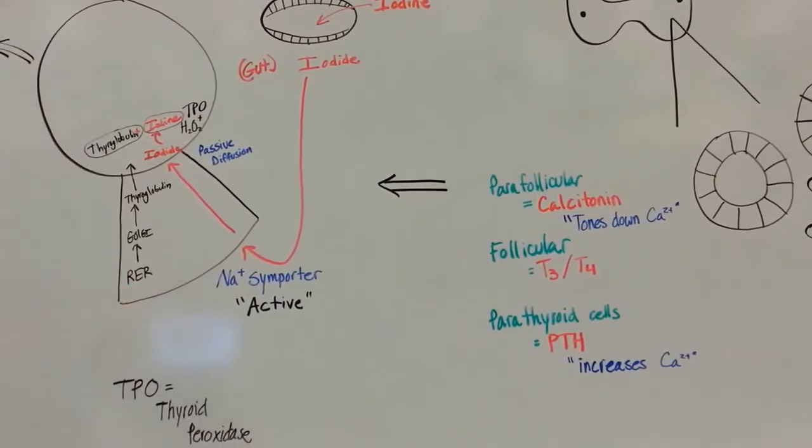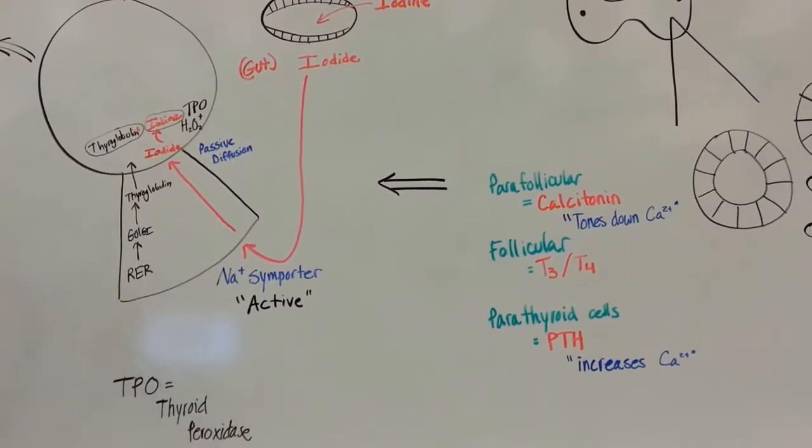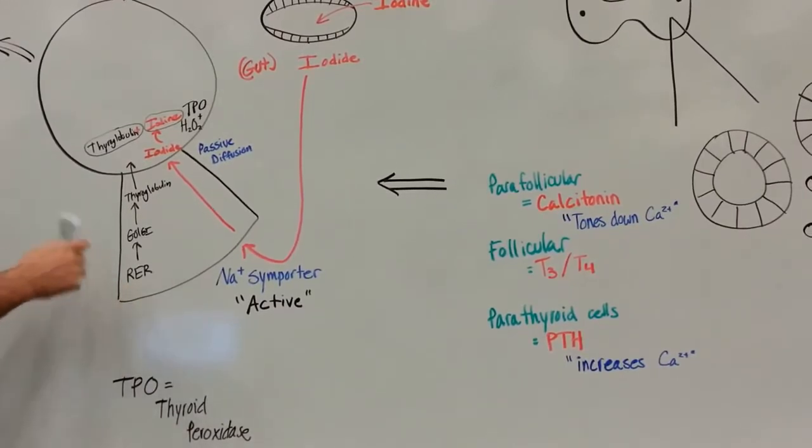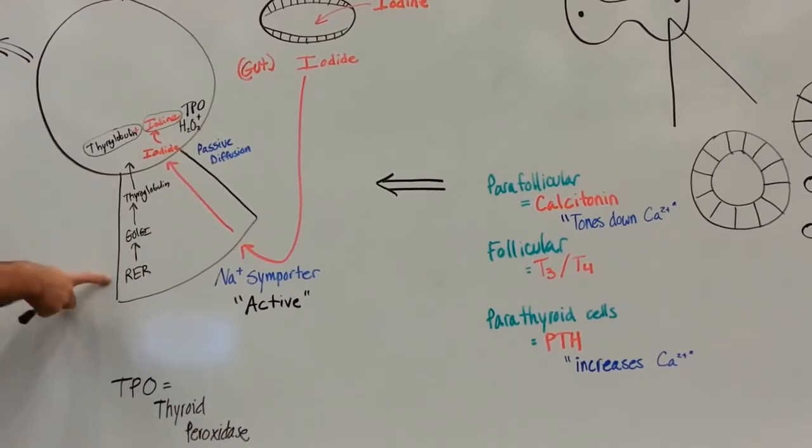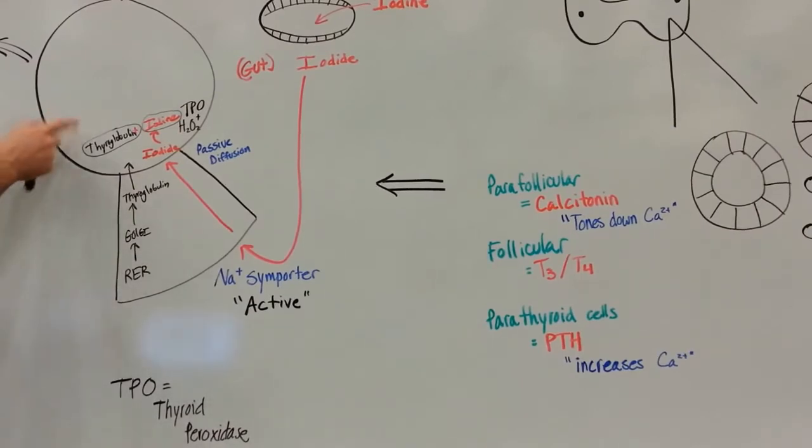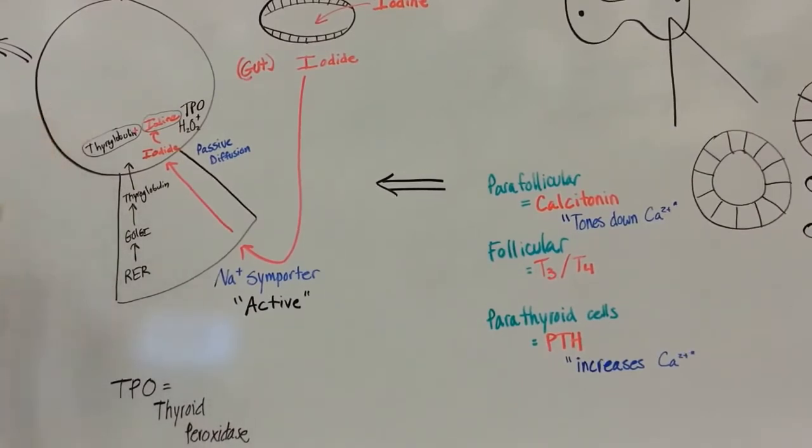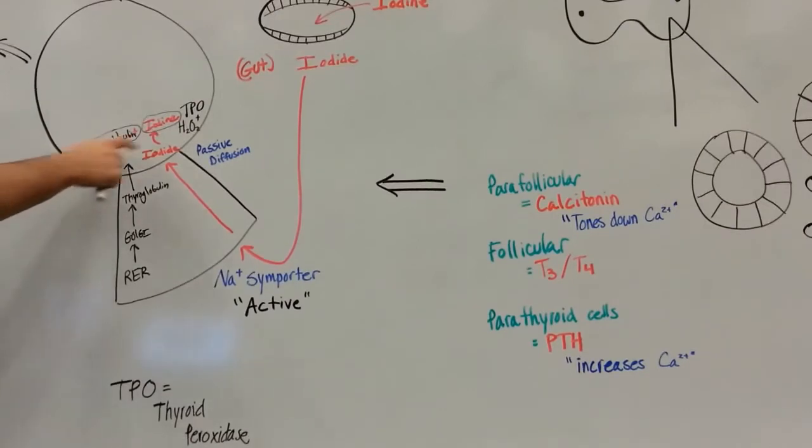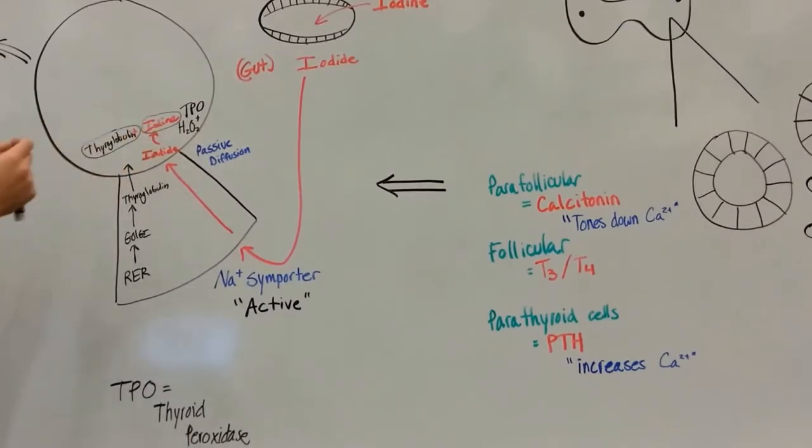But now let's move down here to the rough endoplasmic reticulum. At the same time that the iodide is coming into the cell, you've got your rough endoplasmic reticulum creating this thyroglobulin molecule. It's synthesized, packaged into the Golgi, sent out into the colloid lake. So once in the colloid, that thyroglobulin and the iodine will be combined together.